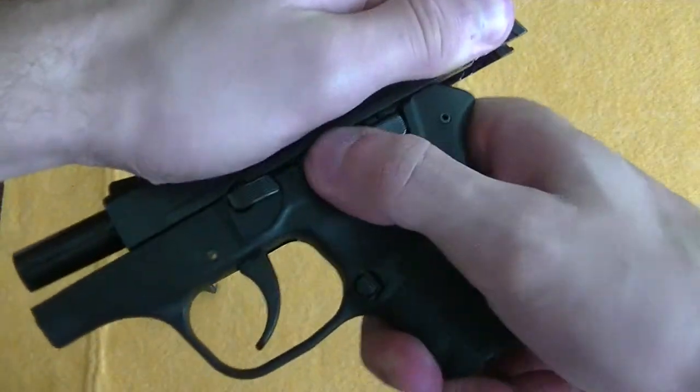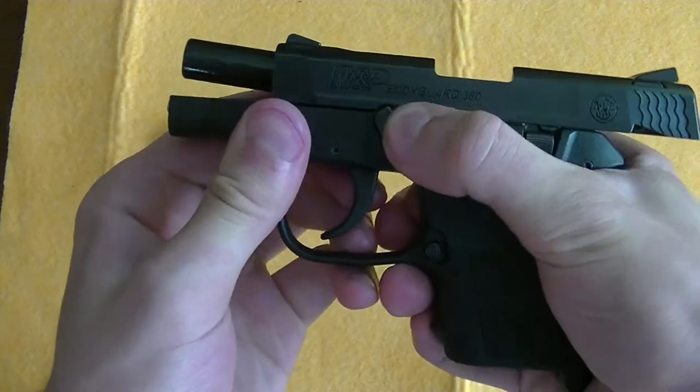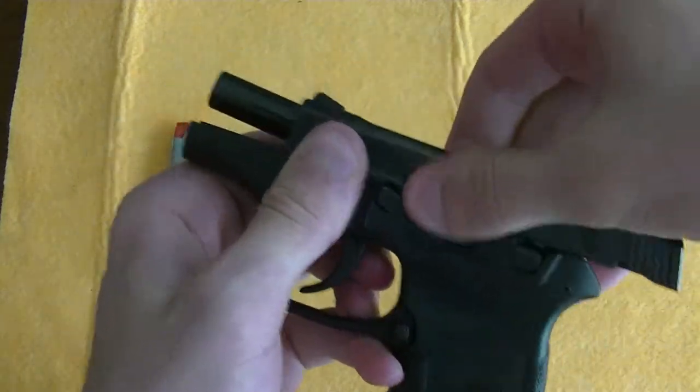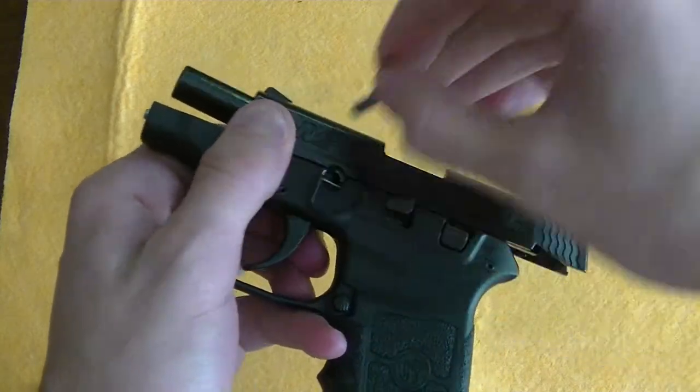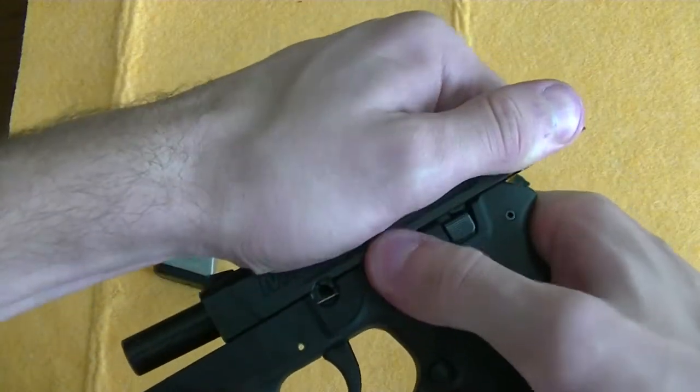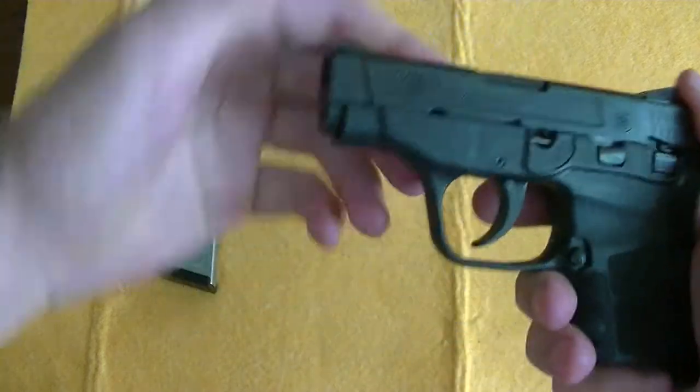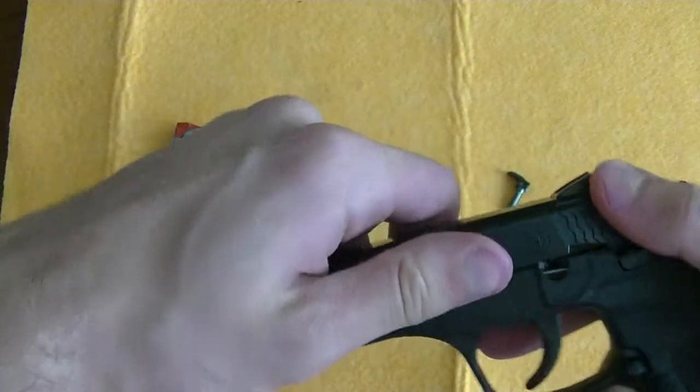Then lock the slide back, rotate the disassembly lever and pull it out. After that, carefully put the slide back in place and then take it off.